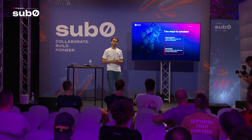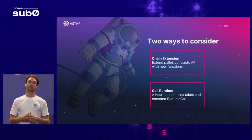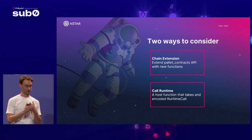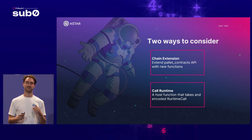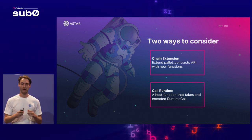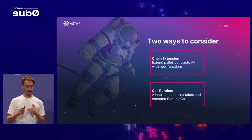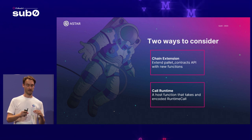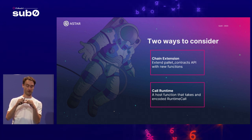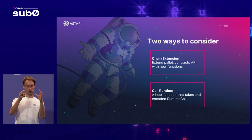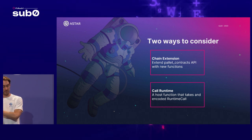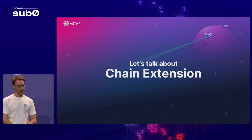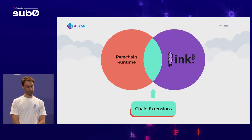Right now there are two ways to do ink-to-pallet interaction that are integrated into pallet contracts. The first is chain extension, where you extend the pallet contracts API with new functions. The second is call runtime, which is a single host function that takes a call as an argument and dispatches it in the runtime. Let's have a look at both of them.